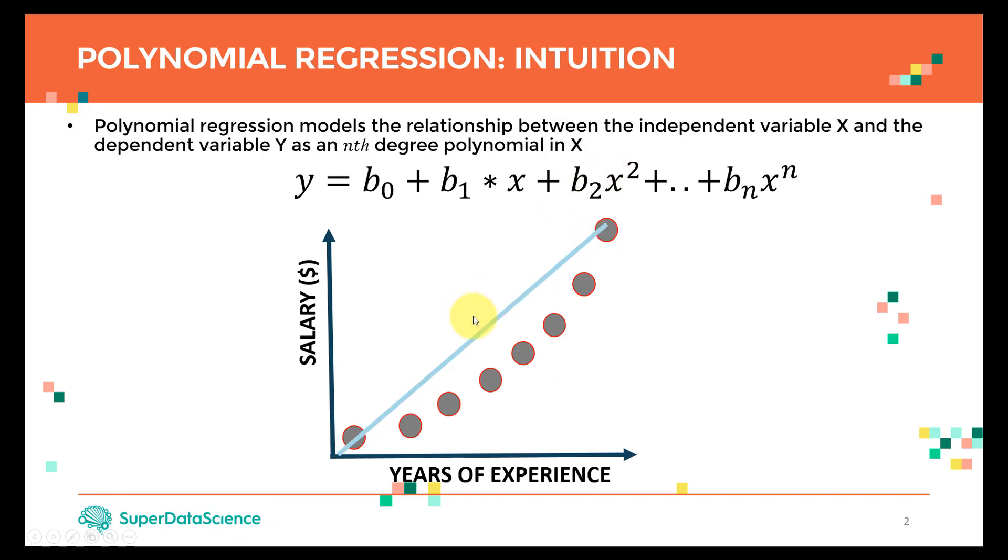This polynomial equation can be modeled with our independent variable X and our dependent variable Y. This equation can be fitted using this curve instead, which is a lot more flexible compared to the straight line. That's why we're going to be able to achieve better results using a polynomial regression model. Let's take a look at the actual equation.